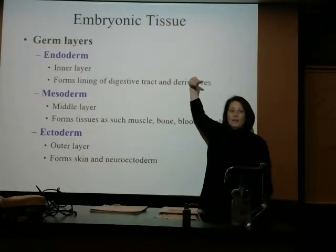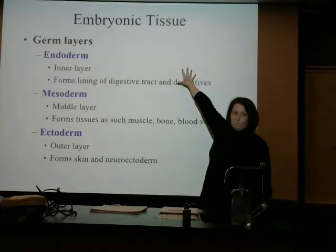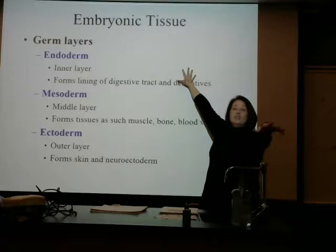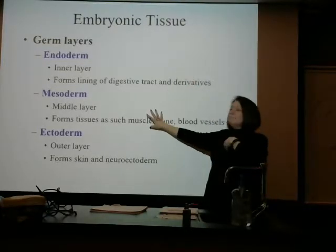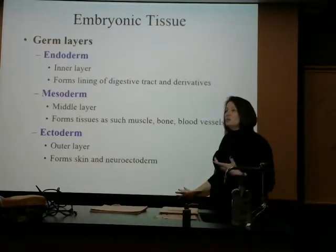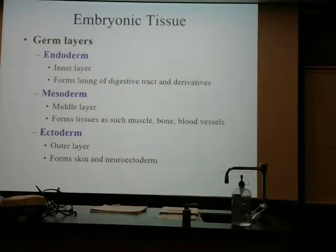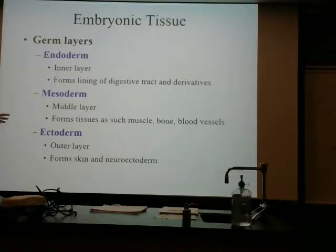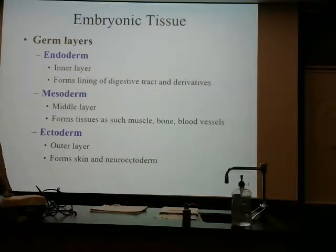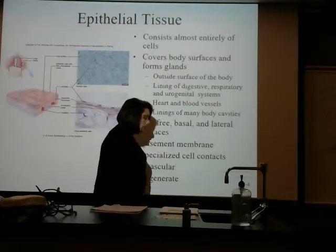So as fertilization occurs and cells multiply, we form germinating layers called endoderm, mesoderm, and ectoderm. Endo means to the inside, meso means middle, ecto means outside. These three germ layers give rise to the tissues of our body. The endoderm — the inner layer — think of the inside of the body: digestive areas and related organs. The mesoderm — middle — think muscle, bone, blood vessels. The ectoderm — outer layer — the skin. And then the neuroectoderm, which is part of the nervous system.